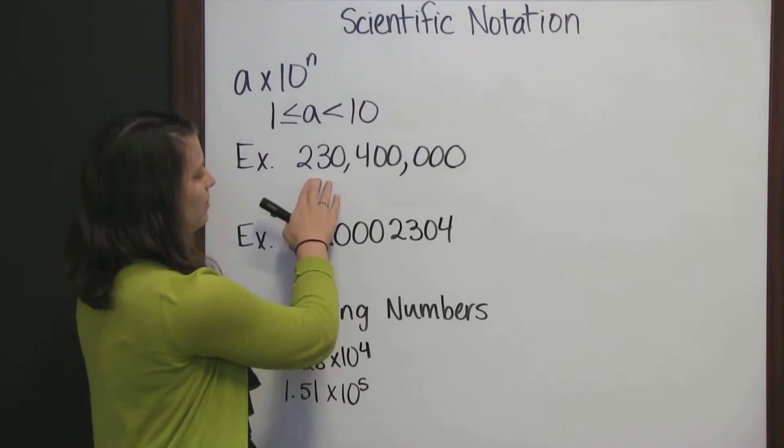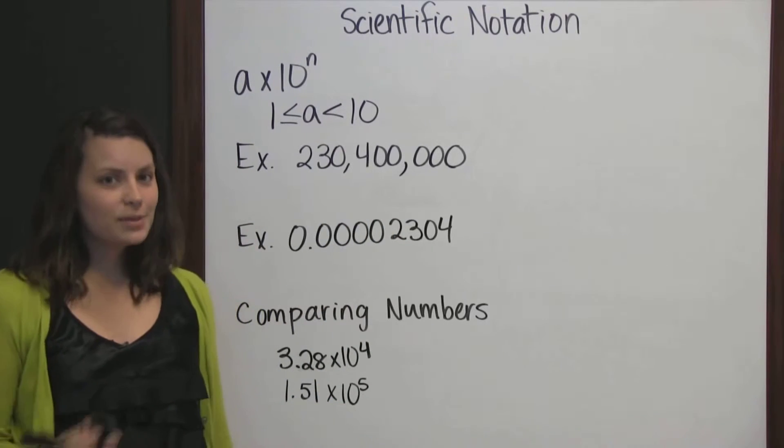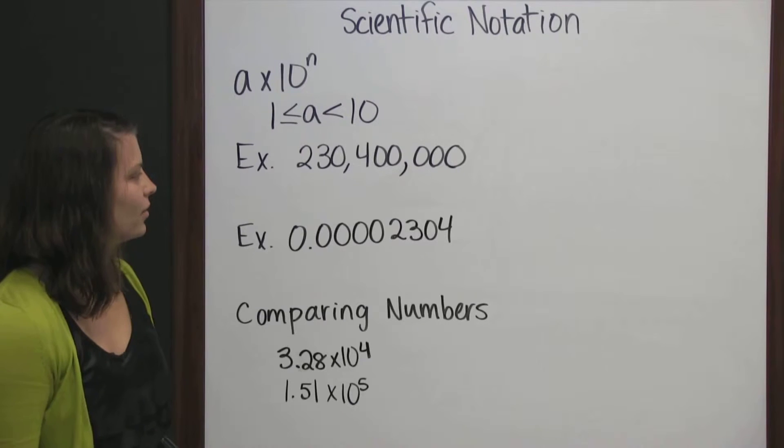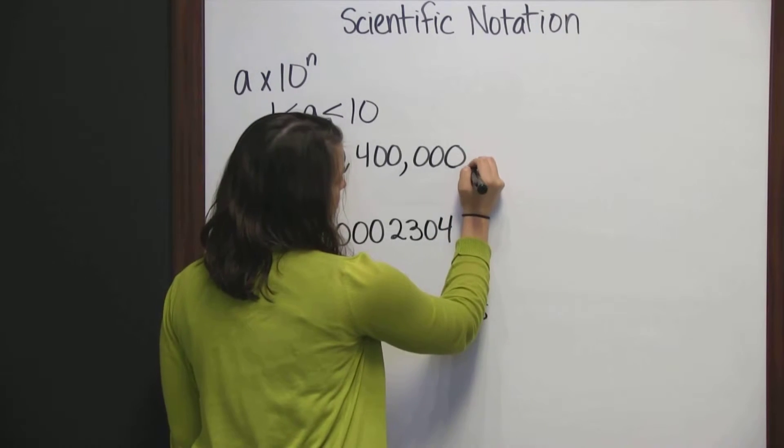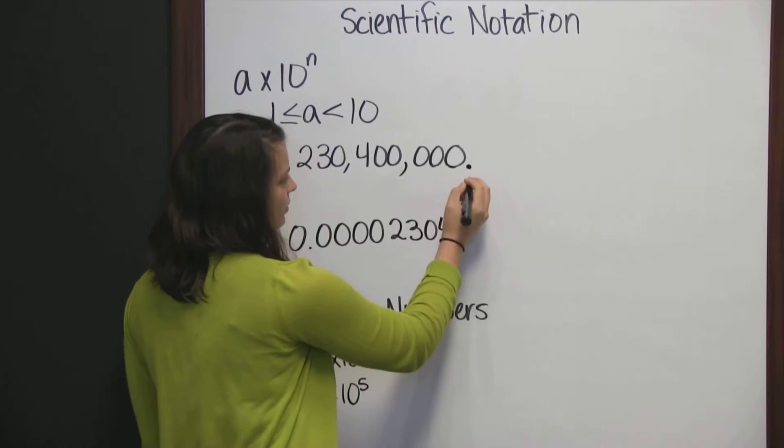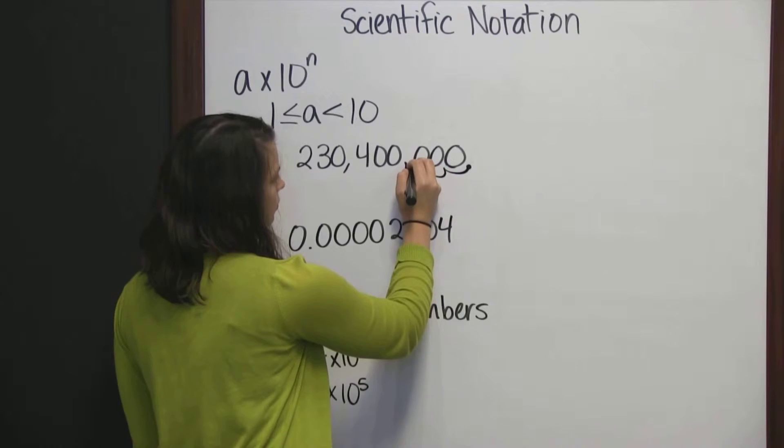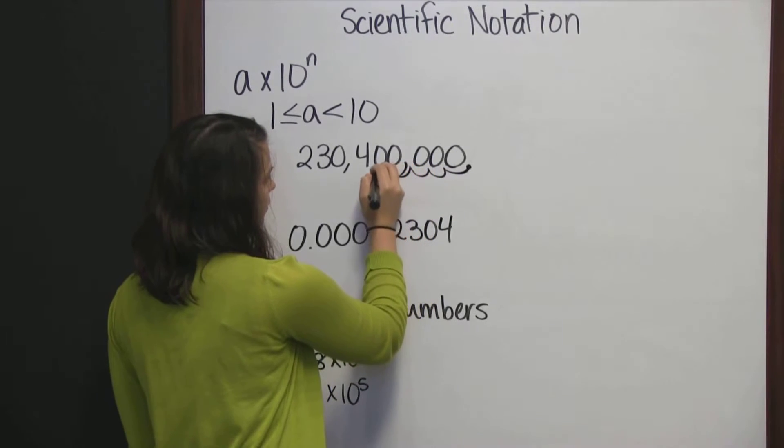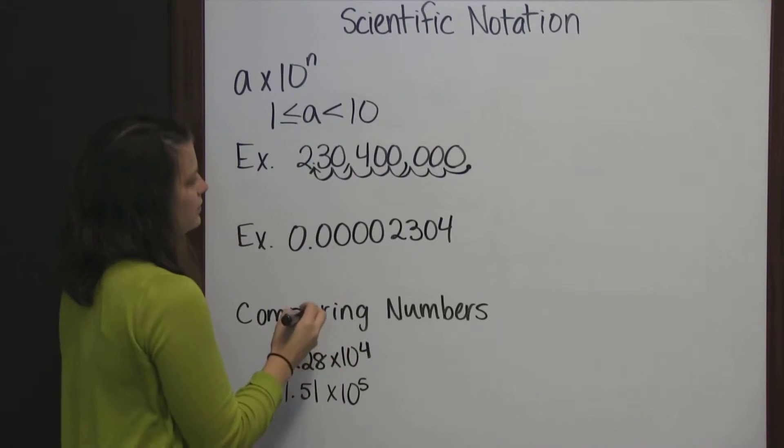Let's take this number, 230,400,000. It's a pretty big number. We can write this in scientific notation by taking our decimal, which is at the end of our number, and moving it 1, 2, 3, 4, 5, 6, 7, 8 places to the left.